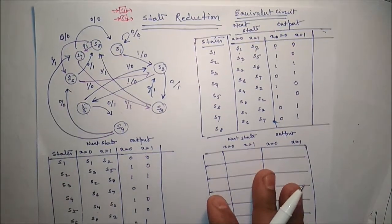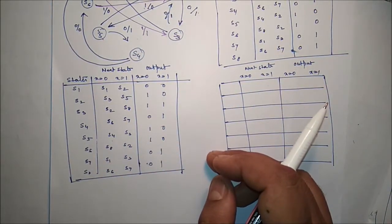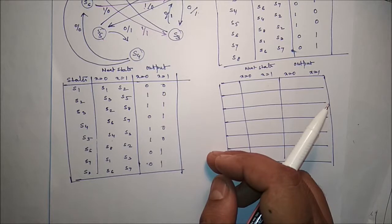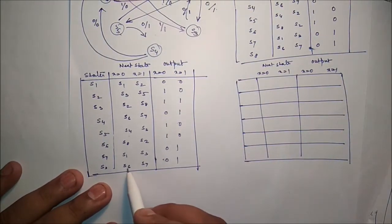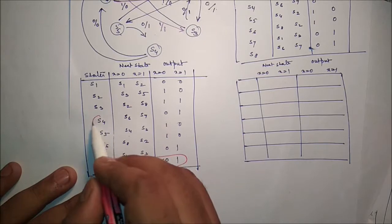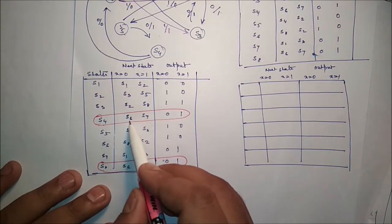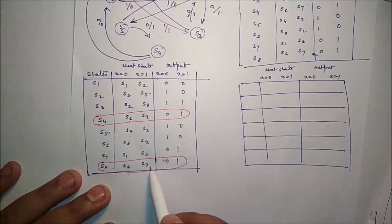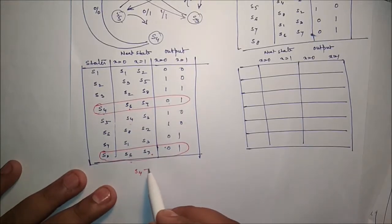Now, let's see how to reduce the state table. When two states are equivalent, one of them can be removed without altering the input-output relationship. We look for two present states that go to the same next state and have the same output for both inputs. Looking at S6 and S7, we can see they have the same next state and same output. So S4 and S8 are equivalent.